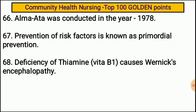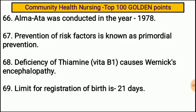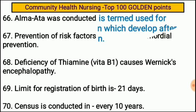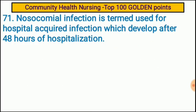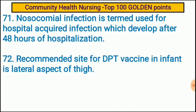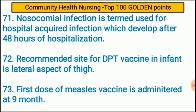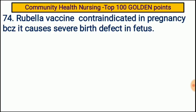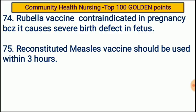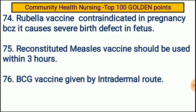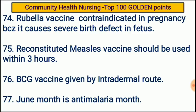Deficiency of thiamine causes Wernicke's encephalopathy. The limit of registration of birth is 21 days. Census is conducted every 10 years. Nosocomial infection is the term used for hospital-acquired infection, which develops after 48 hours of hospitalization. Recommended site for DPT vaccine in an infant is the lateral aspect of the thigh. First dose of measles vaccine is administered at nine months. Rubella vaccine is contraindicated in pregnancy because it causes severe birth defects in the fetus. Reconstituted measles vaccine should be used within three hours. BCG vaccine is given by intradermal route. June month is anti-malarial month.